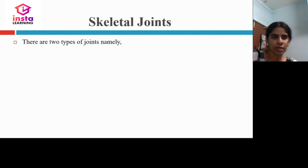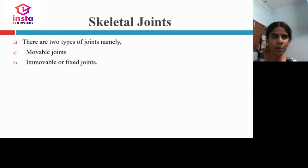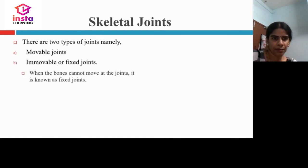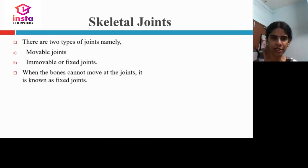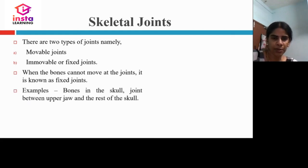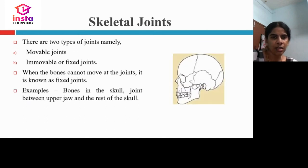There are two types of skeletal joints: movable joints and immovable joints. When bones cannot move at the joints, we call it a fixed or immovable joint. This can be seen in the skull and the joints between the upper jaw and the rest of the skull — these joints are fixed and cannot move.